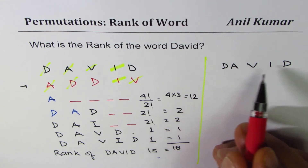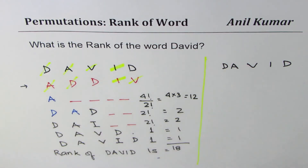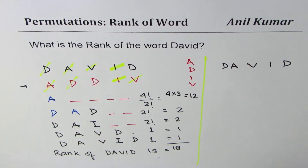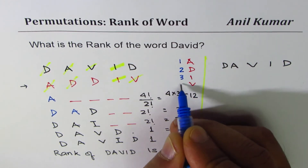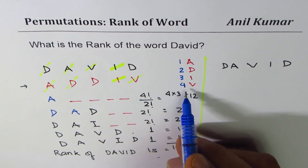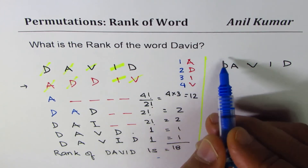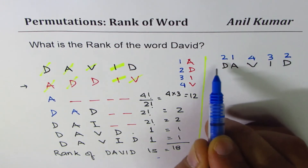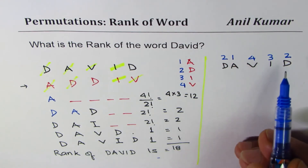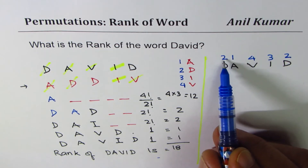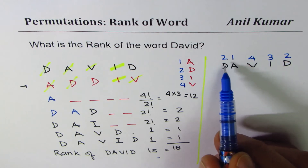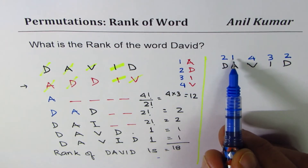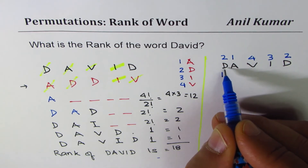Alphabetically A comes first, so we write the letters in alphabetical order: A, D, D, I, V. We give positions to each letter — position 1 to A, 2 to D, 3 to I, 4 to V — in alphabetical order as in a dictionary. So in DAVID: D is 2, A is 1, V is 4, I is 3, D is 2. That is the order in which they appear. The next step is to write, to the right of each number, how many are less than that number itself.